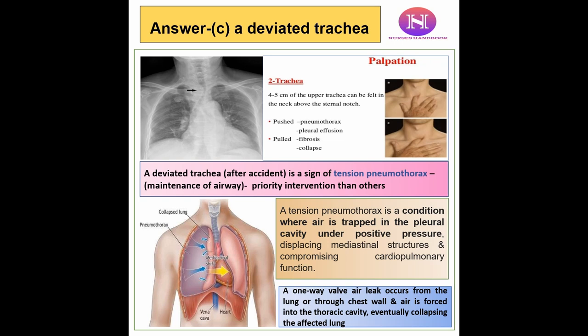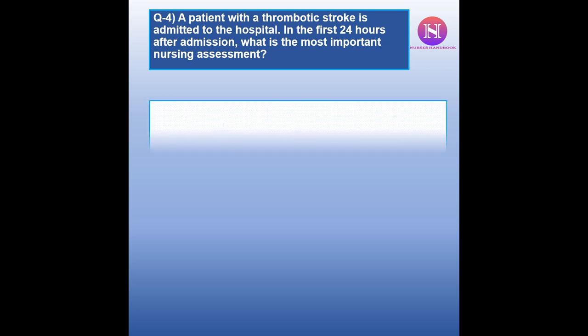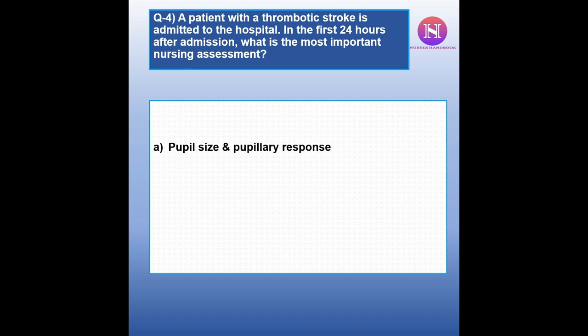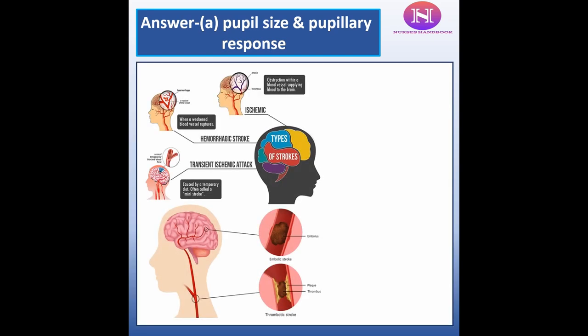Question 4: A patient with a thrombotic stroke is admitted to the hospital. In the first 24 hours after admission, what is the most important nursing assessment? a. Pupil size and pupillary response. b. Electrocardiogram. c. Cholesterol levels. d. Bowel sound. The correct answer is a — pupil size and pupillary response, as they are important indications of cranial nerve alterations.